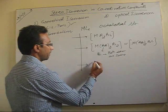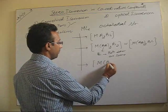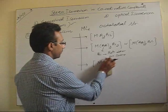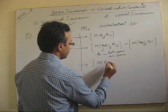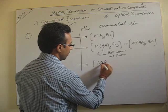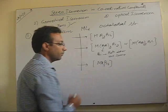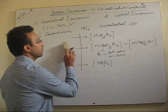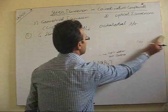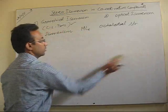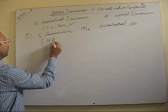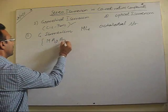The last we have, MA3B3 type of complex. So, let me discuss with examples one by one. Let us take the first case, the most common case in octahedral complexes, that is, MA2B4 type.